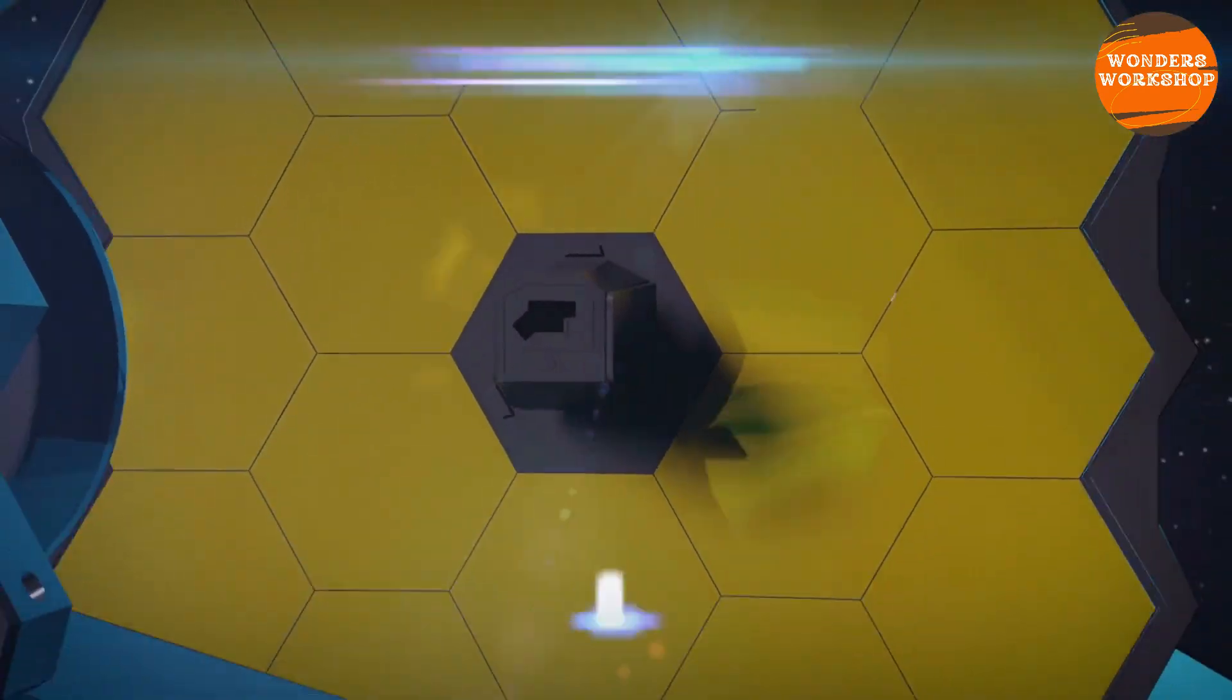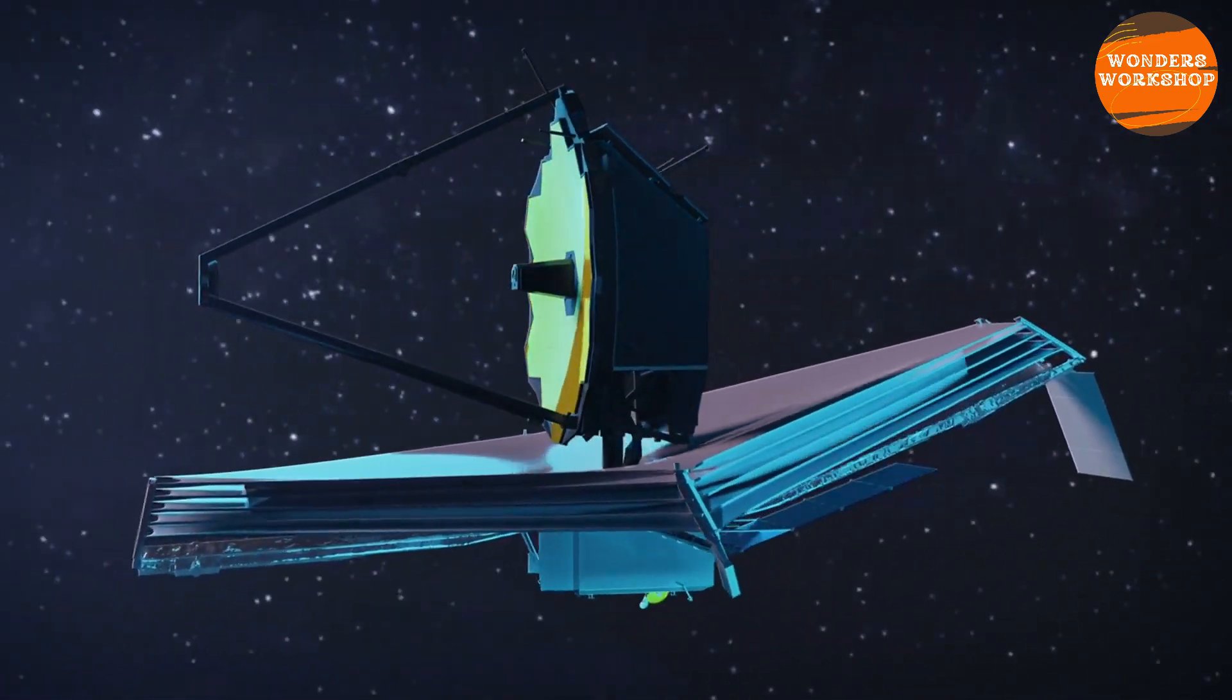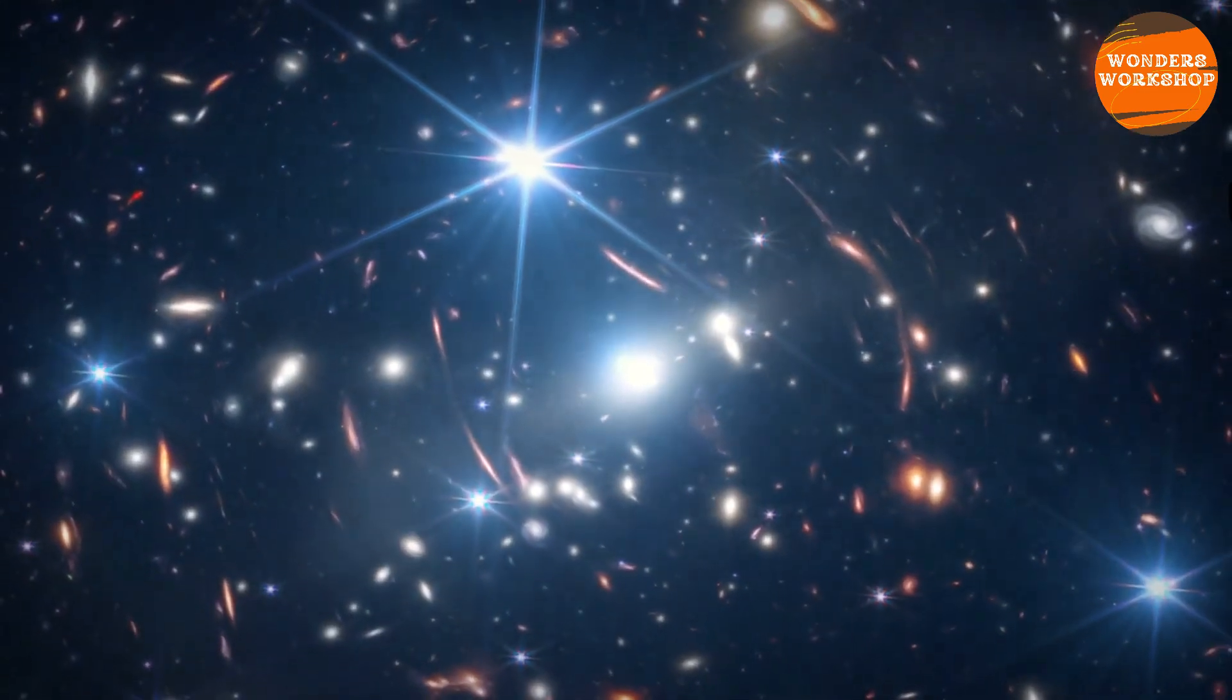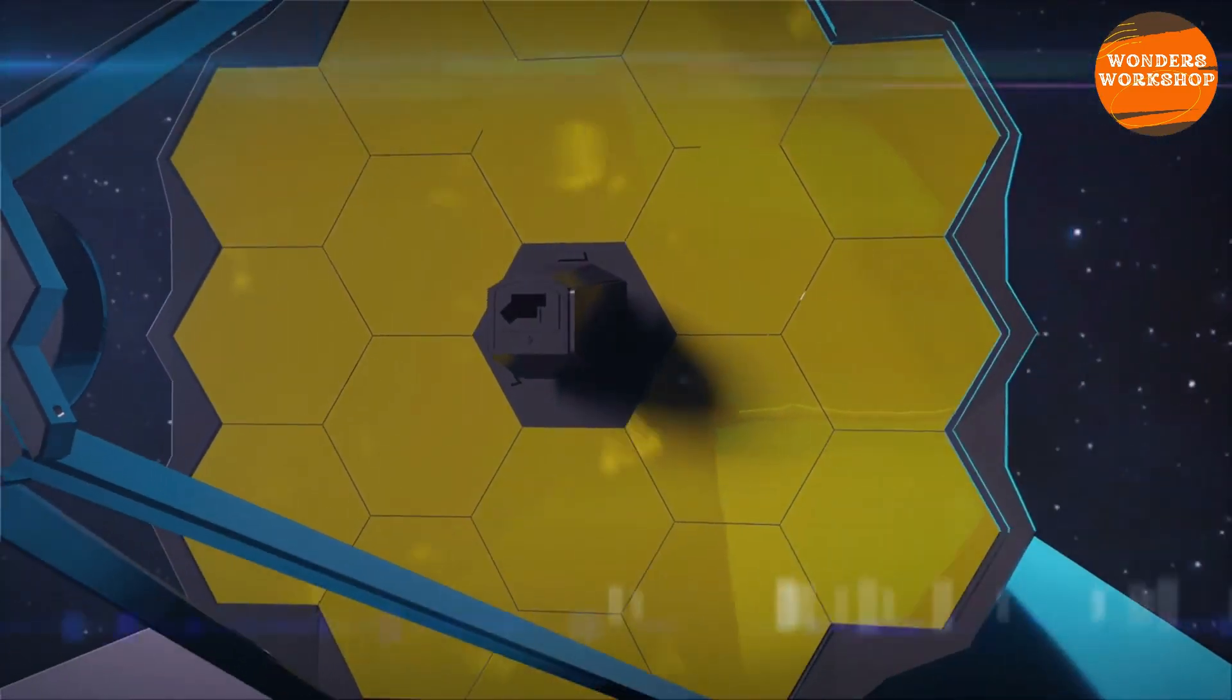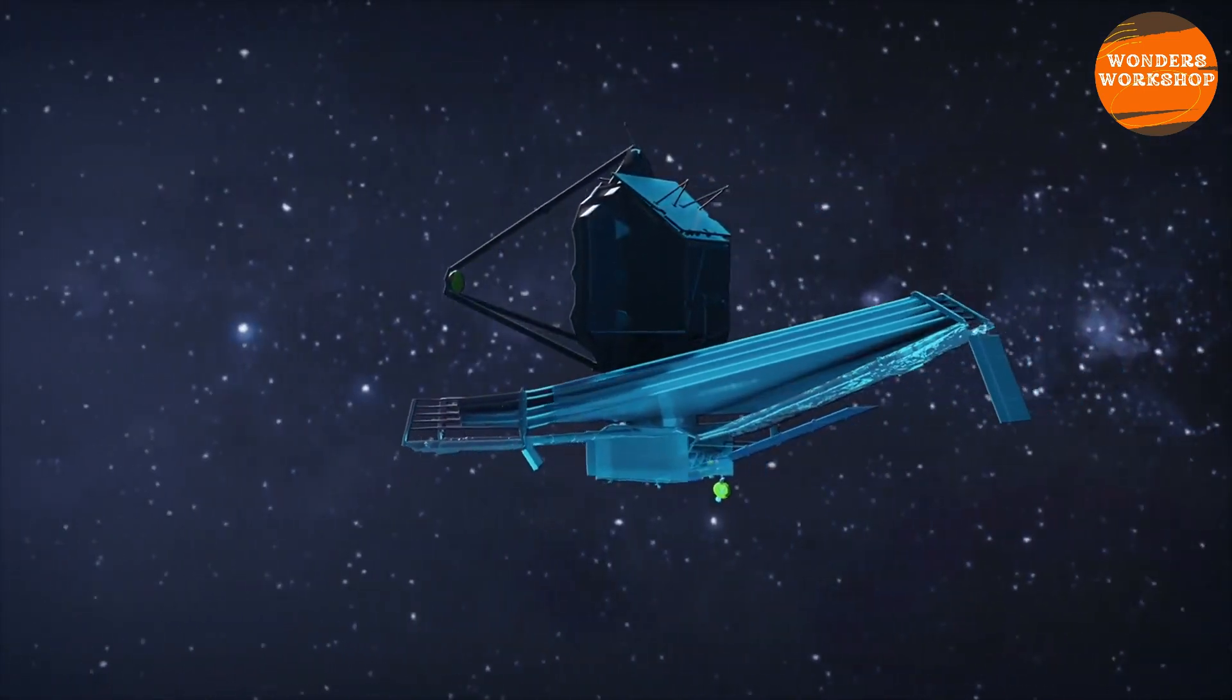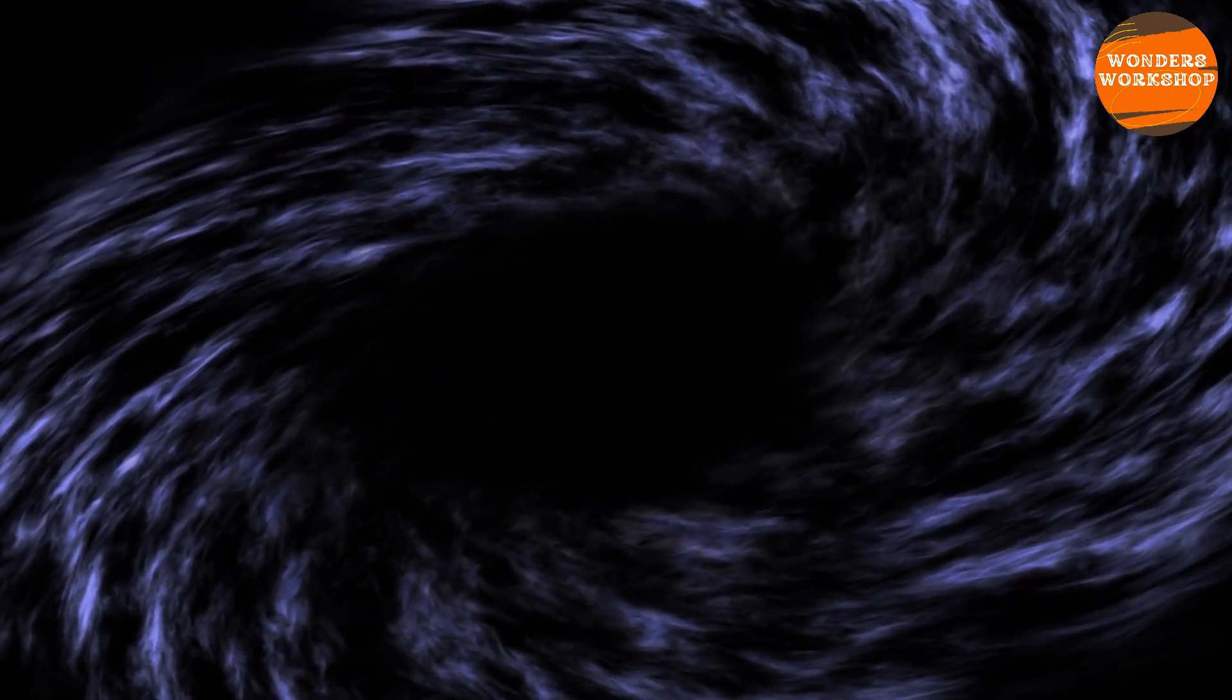When the James Webb Telescope first pointed its high-precision instruments into space in the summer of 2022, it immediately came across a sensation: galaxies so ancient and majestic that they took the researchers' breath away. But James Webb's cutting-edge and extremely sensitive light technology not only detected the oldest galaxies ever discovered but also an inexplicable black hole that could forever change our understanding of the universe. Within the galaxy GNz-11, a black hole was discovered that is one of the most elusive ultra-massive black holes imaginable.